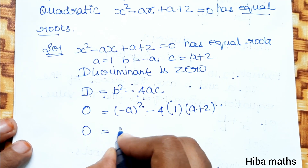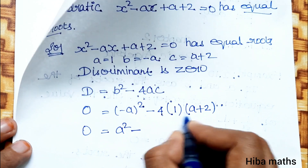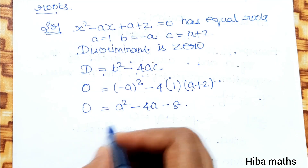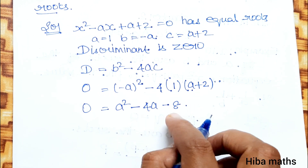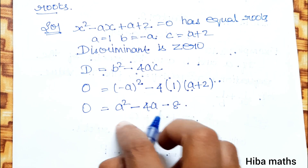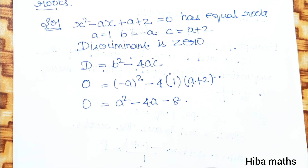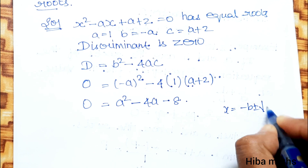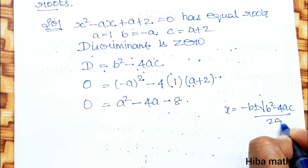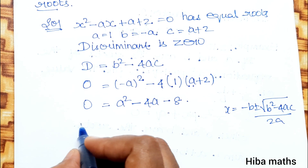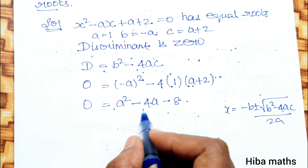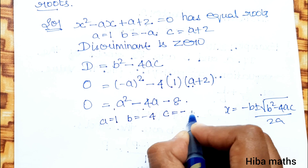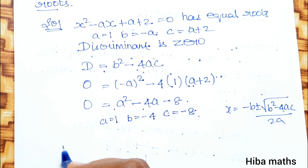So, 0 equals minus a whole squared minus 4 times 1 times (a plus 2), which gives a squared minus 4a minus 8 equals 0. We now use the quadratic formula to find the roots: x equals minus b plus or minus root of b squared minus 4ac, all divided by 2a.